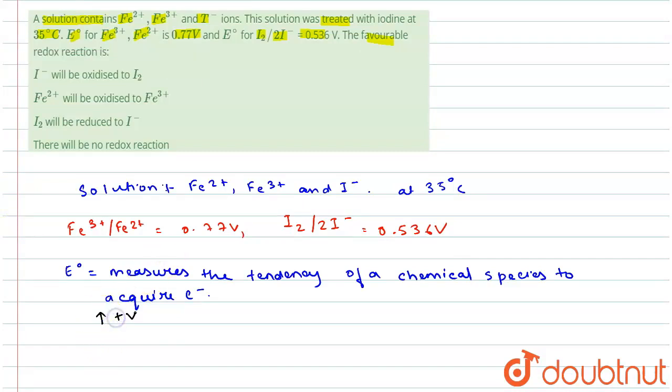Generally, the more positive the reduction potential (E°), the greater will be the species' affinity to be reduced.